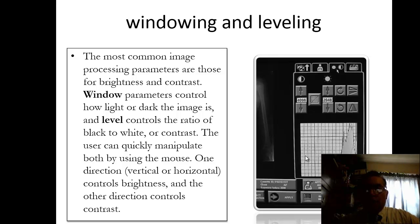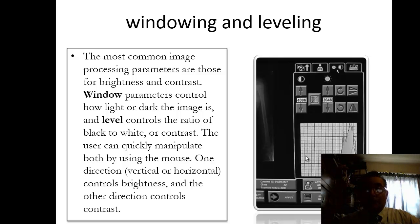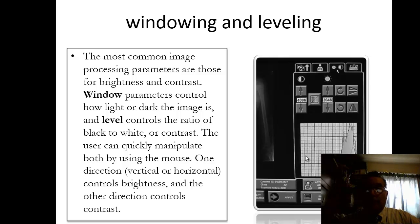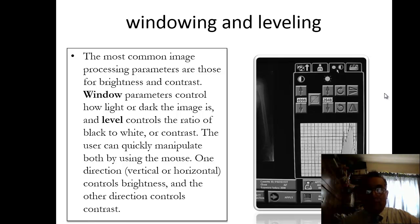Windowing and leveling are digital mechanisms within CR or DR to change the contrast — that would be windowing — or to change the brightness of an image — that would be leveling. Generally these work with a mouse click: moving the mouse up and down changes the brightness or level; moving the mouse left to right changes the window or contrast. You can also directly manipulate a histogram — this graph — by clicking and stretching it to actually change the contrast and brightness of an image.